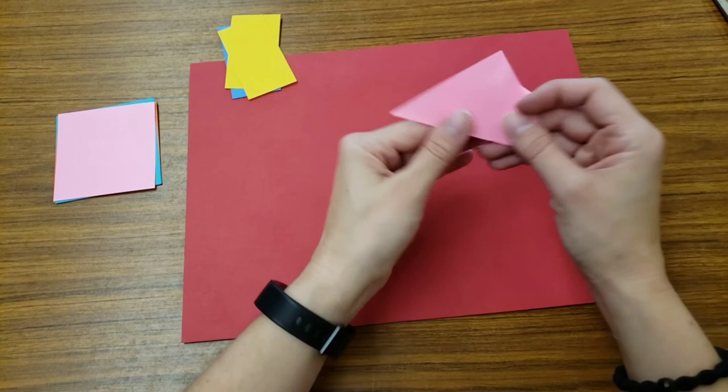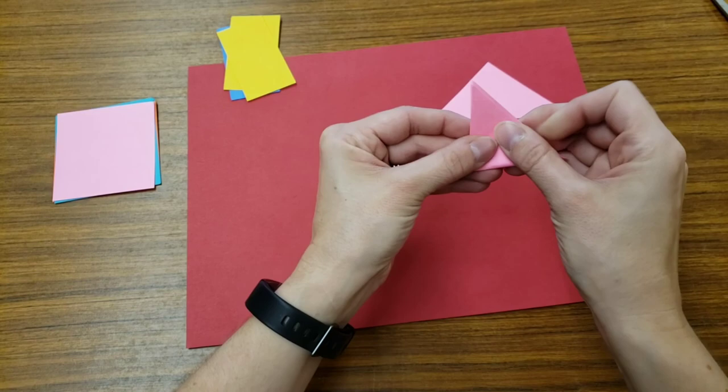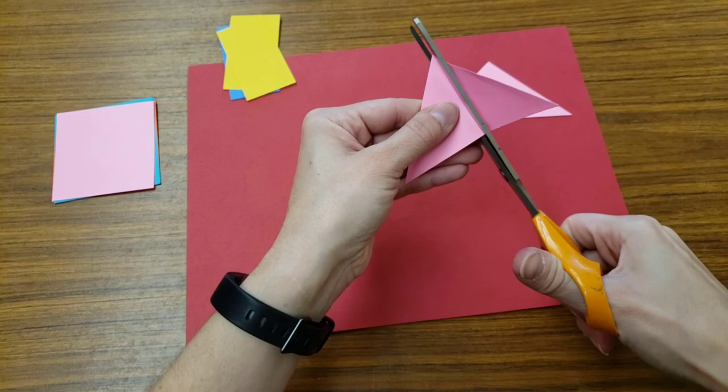They don't have to stay this size. If I wanted, I could have this one be a big triangle. And if I fold it again and cut, what will it give me? Two smaller triangles.